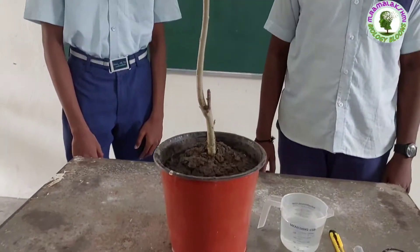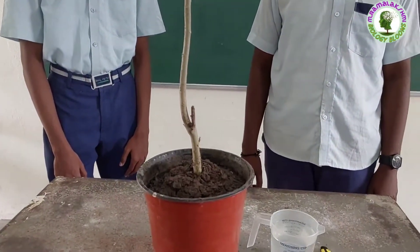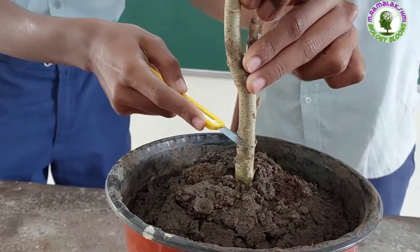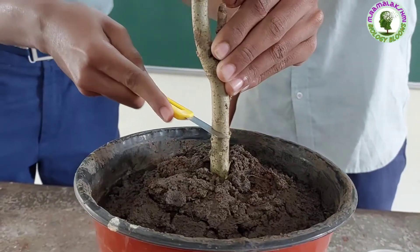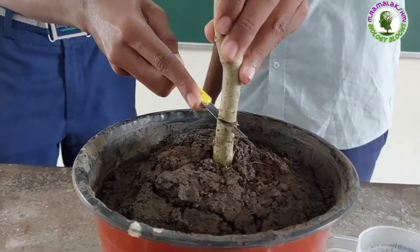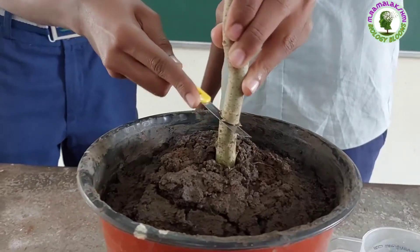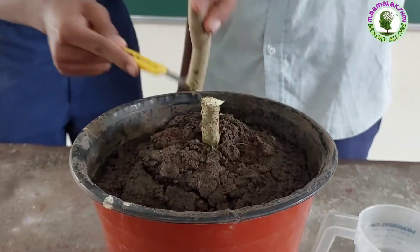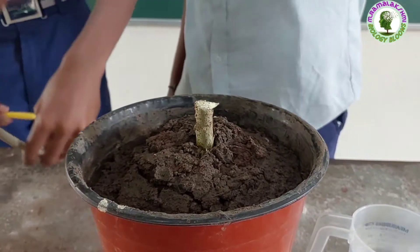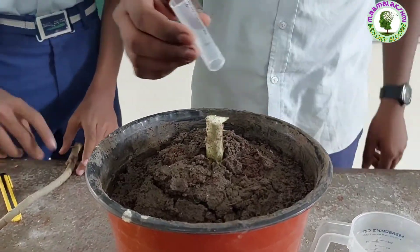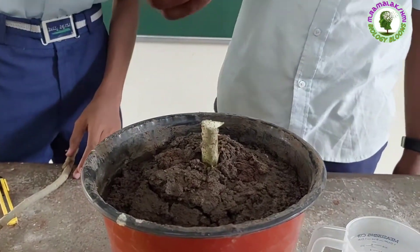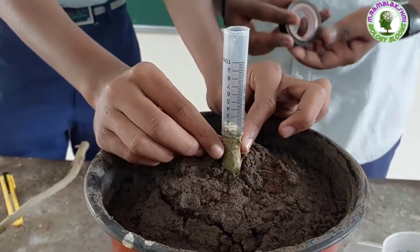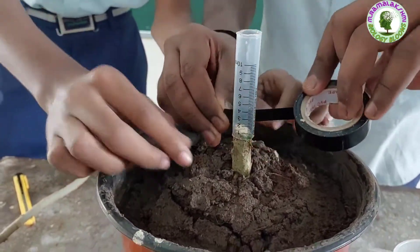First, cut the stem of this plant near to the ground level. Now connect the transparent tube to this stem with the help of the tape.